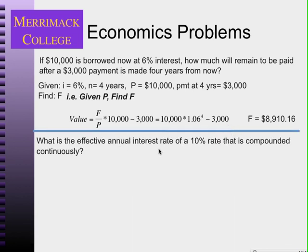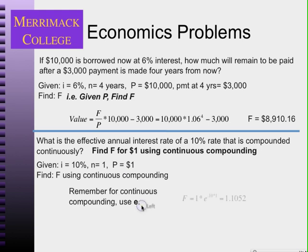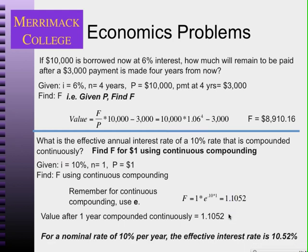What is the effective annual interest rate of a ten percent rate compounded continuously? Using the continuous compounding formula e^(i×n) with i = 10%, n = 1 year, and a $1 present value, the future value of one dollar is $1.1052. So the effective interest rate is 10.52%. The nominal rate is ten percent, but the effective rate is higher.